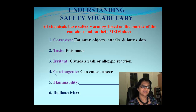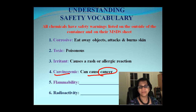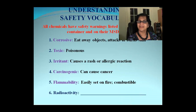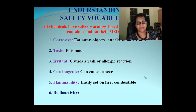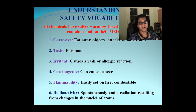The next one is carcinogenic, and the term carcinogenic always refers to a chemical which can cause cancer. We have to be very careful when we use these chemicals in our lab. Flammability means the chemical is flammable — it can easily catch fire or be combustible — and again we have to be very careful when we use those in the lab.